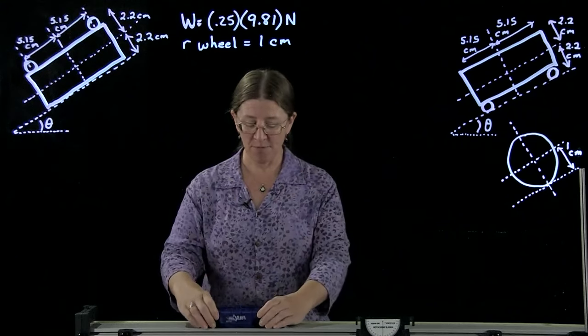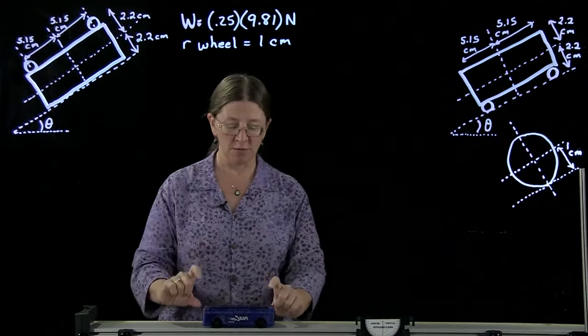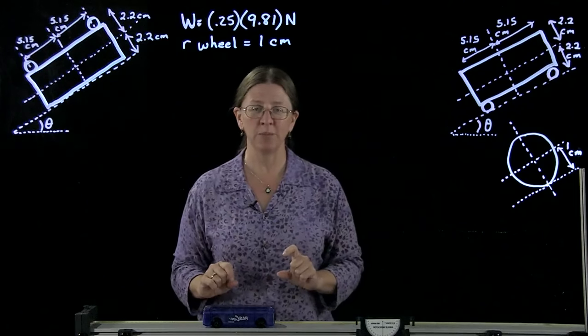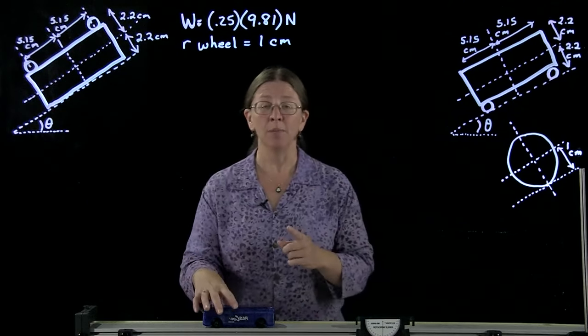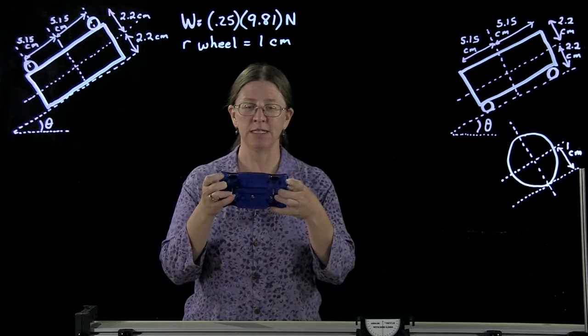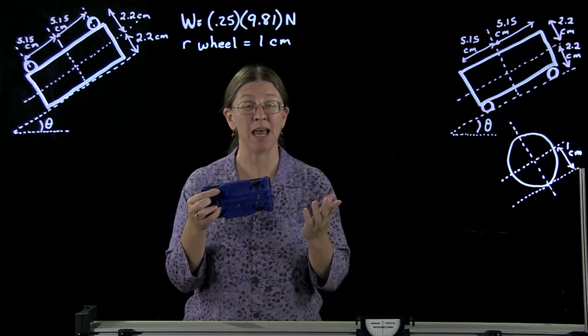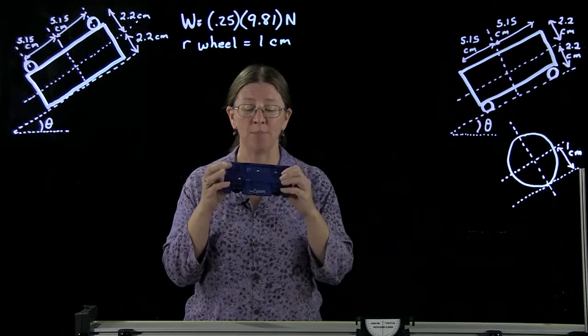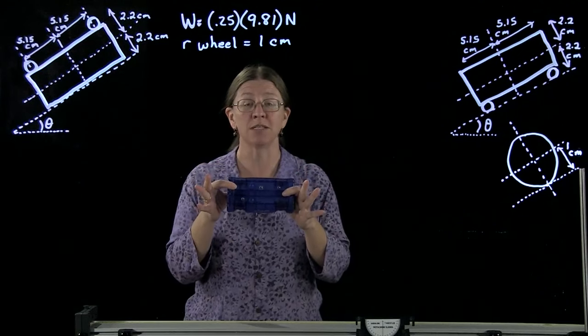I have my 250 gram car. It's 10.3 cm distance between the two wheels, the height is about 4.4 centimeters. I want to look at when it rolls and when it slides. Now I'm going to make one assumption: these plastic hard wheels have approximately the same sliding coefficient on this aluminum track as the top plastic surface. It's all hard plastic and aluminum, so it's probably very close to the same.